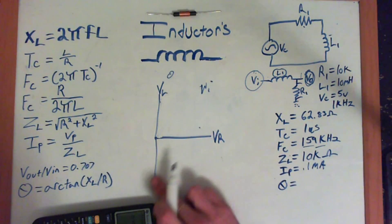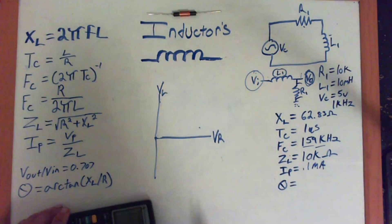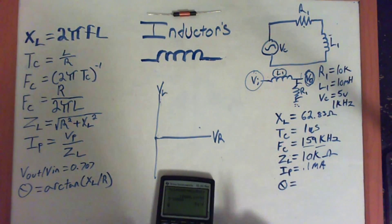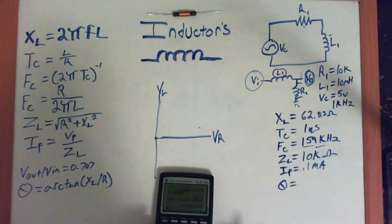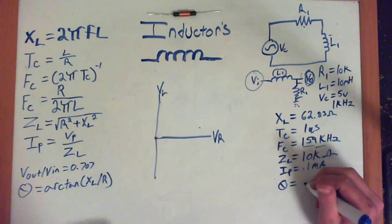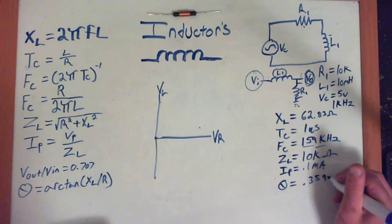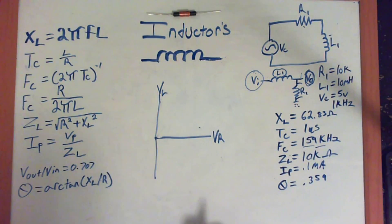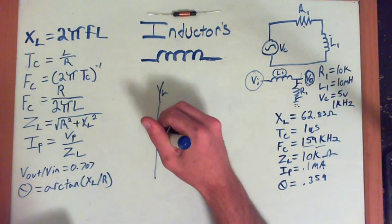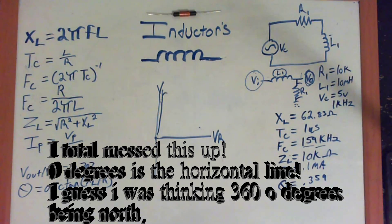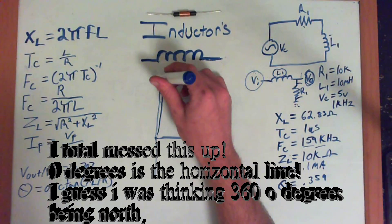So, we'll use our arc tan, which is, on the calculator, tan to the negative 1 on mine. I don't know if any of the newer ones actually say arc tan. So, it's going to be the XL divided by the resistance. So, our XL is 62.83 and we're going to divide that by 10,000. So, 62.83 divided by 10,000. And that's going to give us a phase angle of 0.359. Which isn't even at 1 degree. So, since we started at 0 up here, our phase angle is literally like that.